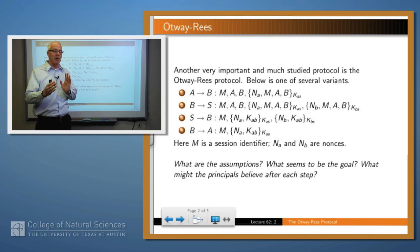That's the encrypted part, because notice that the encrypted part is encrypted with K_AS, which B doesn't have.